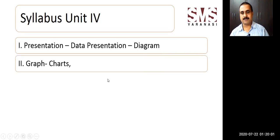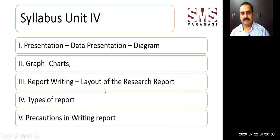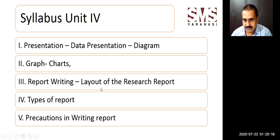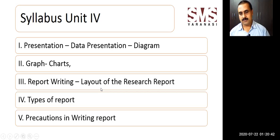In the fourth unit we are going to cover data presentation — diagrams, graphs, charts — report writing, types of report, and precautions while writing a report. From an examination point of view, the most important section is the layout of the research report, from which a long answer type question can be asked. Types of report, graphs and charts, data presentation, and precautions while writing a report can be asked as short answer type questions. You should prepare well for report writing and layout of the research report.